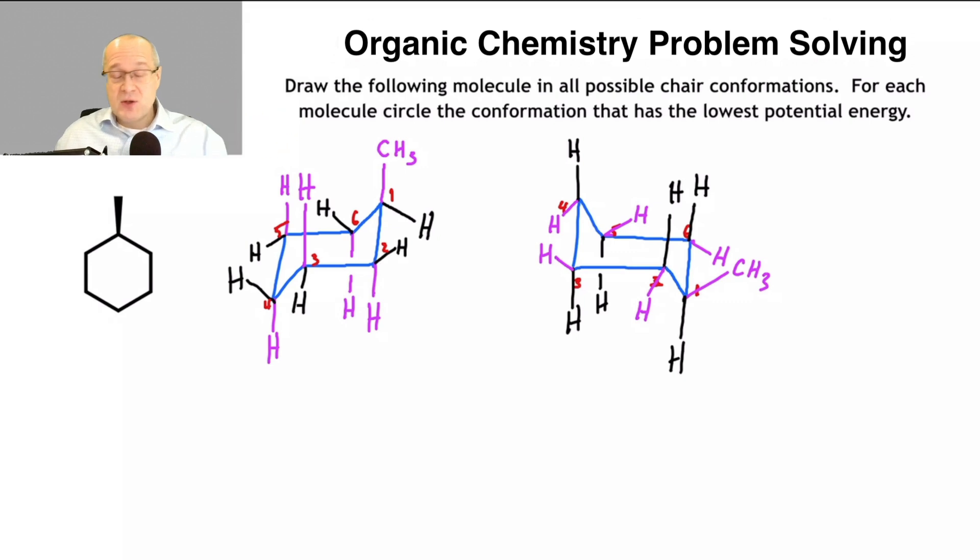Now, I recommend drawing the hydrogens in, especially at the beginning, because students often forget they're there. But once you become more advanced, if the question doesn't specifically say to include them, you can start to leave them out. Now, the question has a follow-up. For each molecule, circle the conformation that has the lowest potential energy. So, we only have one molecule here. We need to know the lowest potential energy. Well, the lowest potential energy puts the largest group in the equatorial position. The largest group has to be equatorial. And it's this one right here, because that methyl group is in the equatorial position.